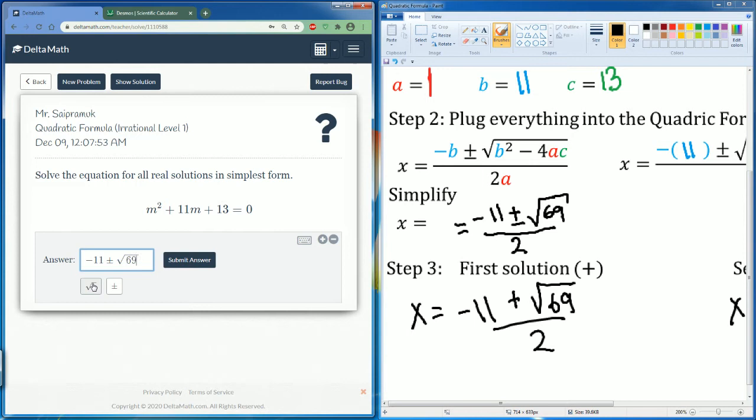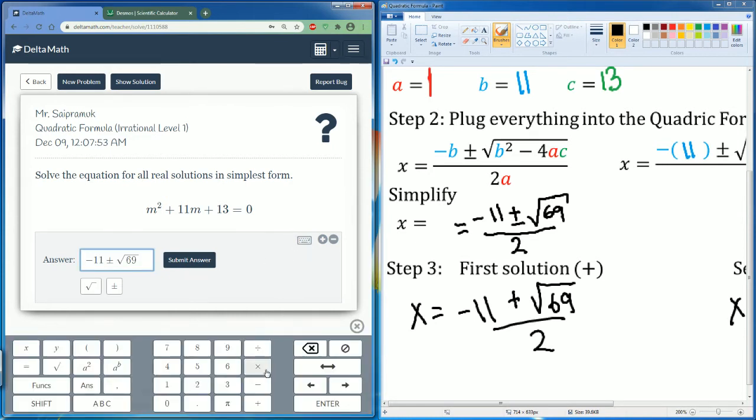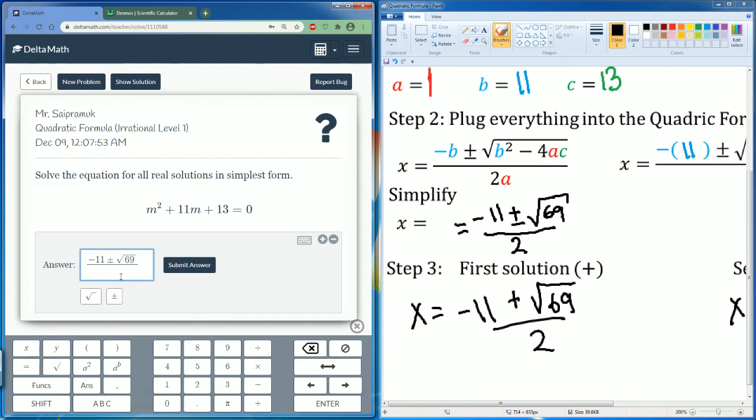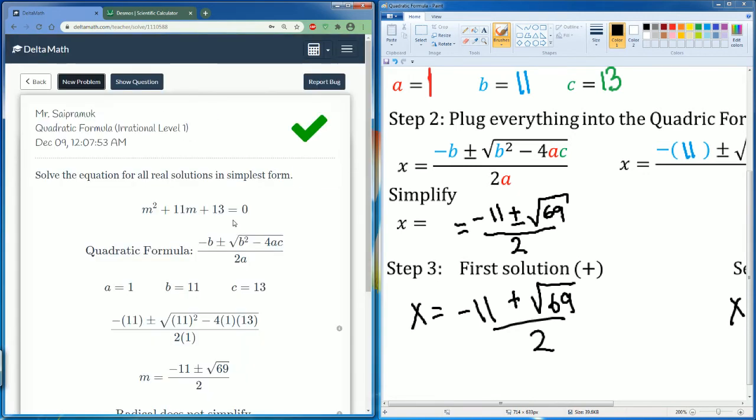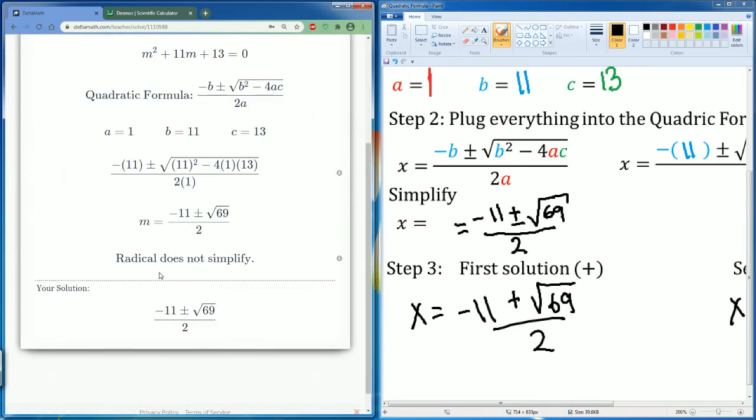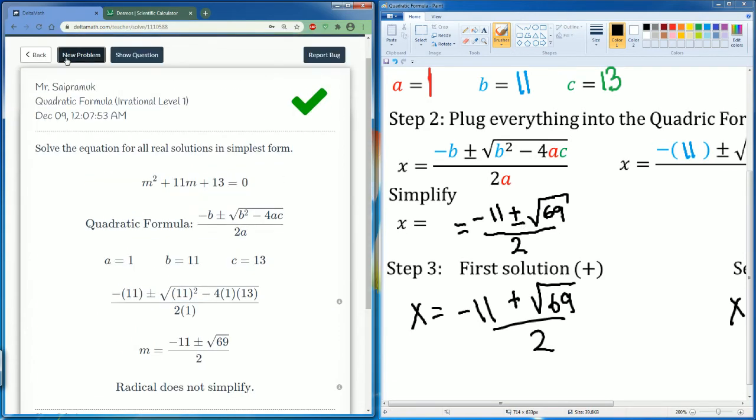But let's see if Delta Math allows me to keep it like this. So this is negative 11 plus and minus radical 69. You see how I select this all, then I hit the divide symbol. I select this all, then I hit the divide symbol so that brings it down, divide this by 2. Let's see if it accepts this answer—oh it does, perfect! So the radical does not simplify, so we actually keep it like this for the Delta Math. All right, good. So let's do another problem.